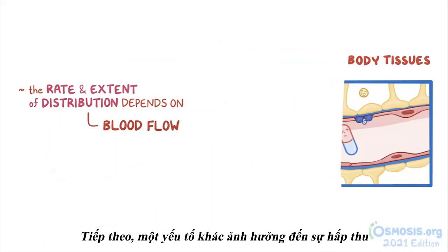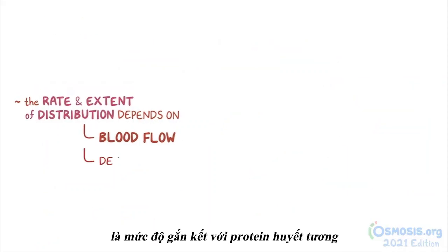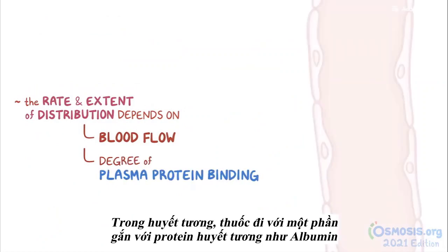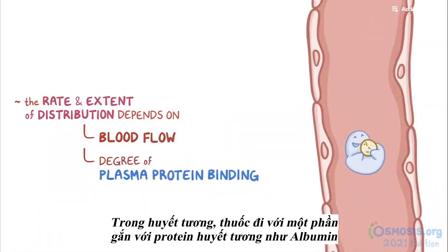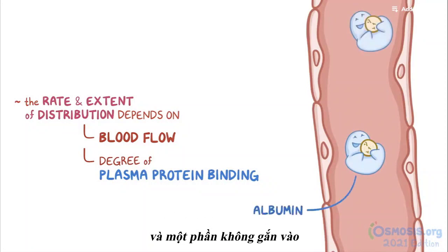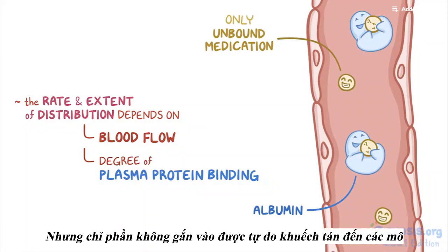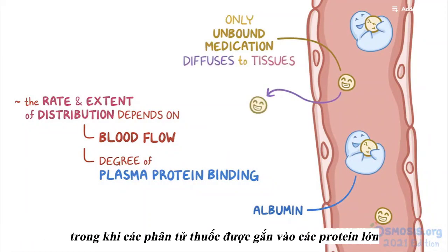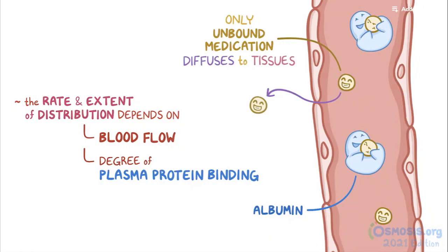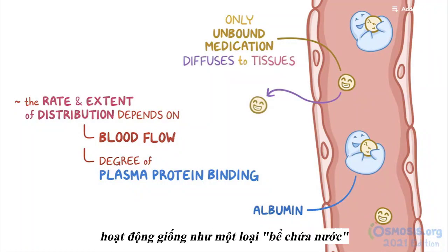Another factor affecting distribution is the degree of plasma protein binding. In the plasma, medications travel partly bound to plasma proteins like albumin, and partly unbound or free. Only the unbound fraction is free to diffuse to tissues, whereas medication molecules that are bound by large proteins remain limited to the plasma, acting as a kind of reservoir.